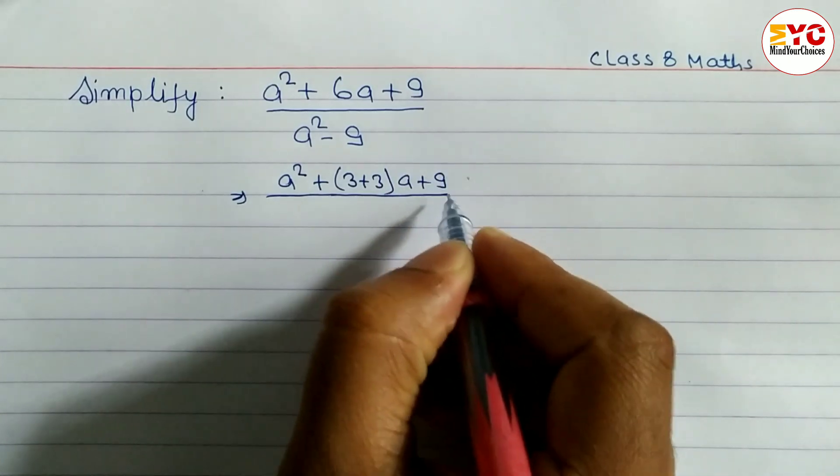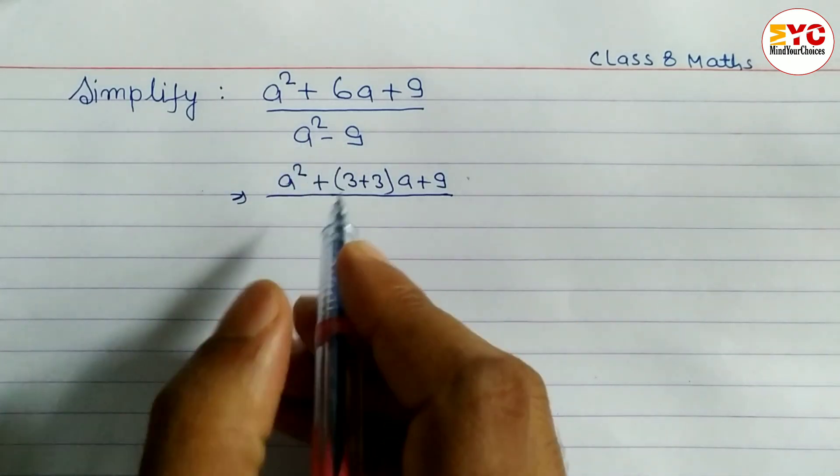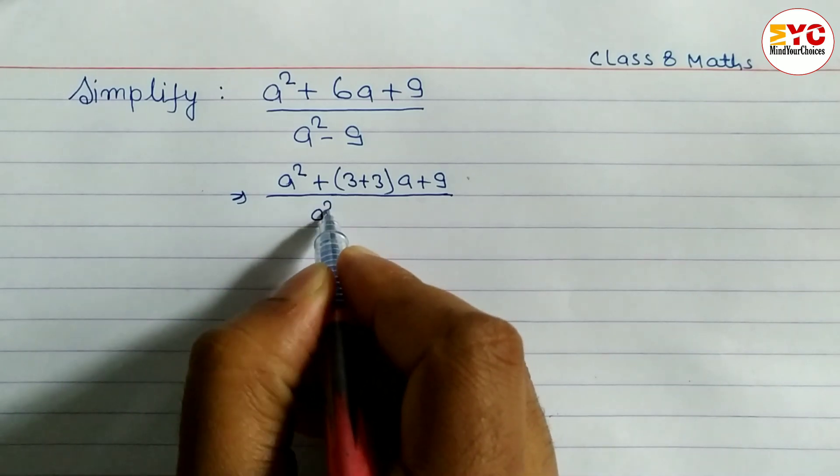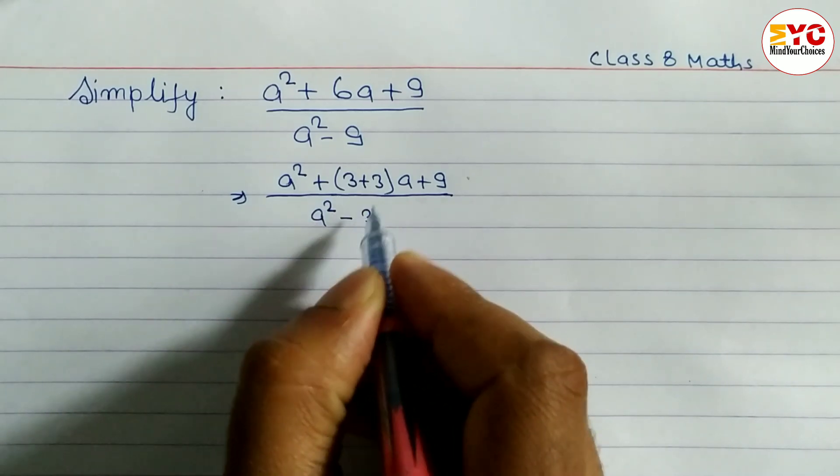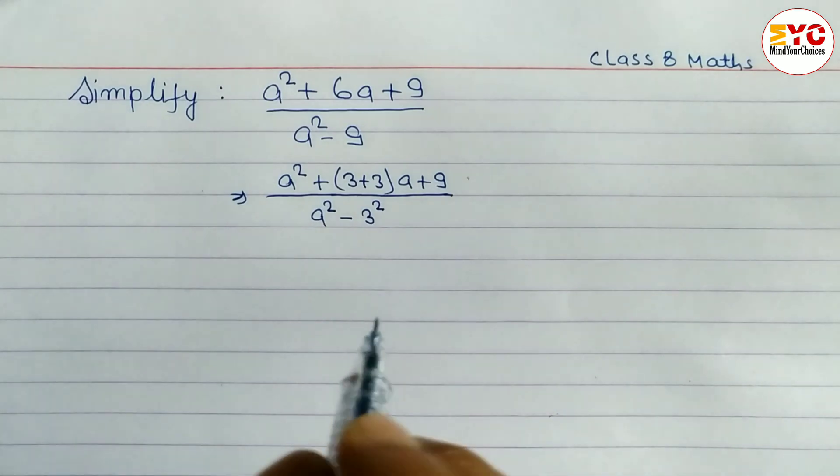And in the denominator you can see here a square minus 9. So we can convert in the form of a square minus b square. We can write a square minus, square root of 9 is 3, so we can write here 3 square.